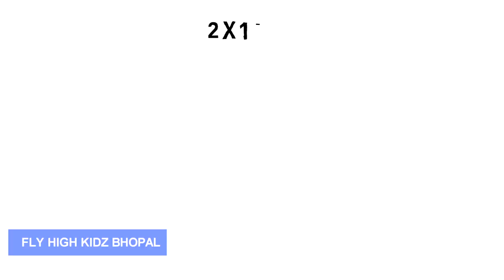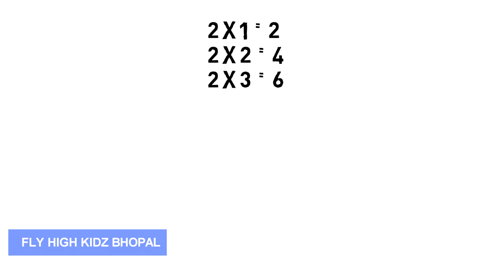Let's start the table of 2. 2 1's are 2, 2 2's are 4, 2 3's are 6, 2 4's are 8, 2 5's are 10.